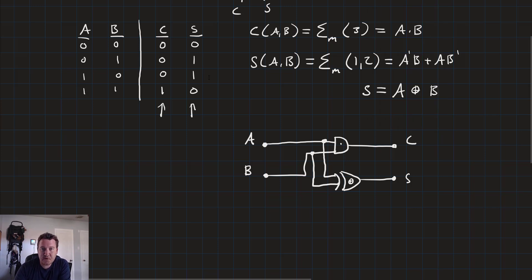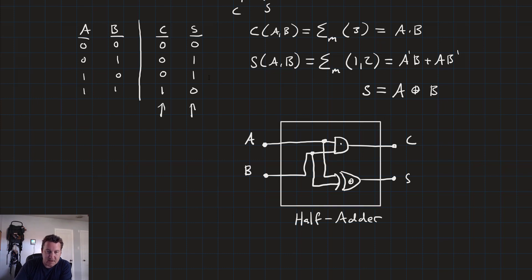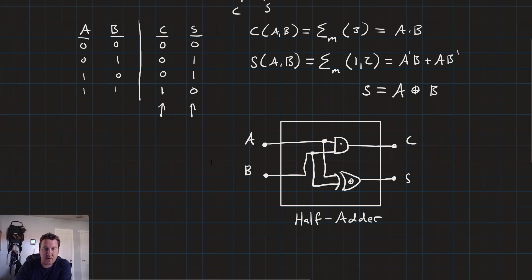This circuit has a name — it's called a half adder. Now if we have a circuit called a half adder, it sort of stands to reason that there should be a circuit called a full adder. And that's true. The full adder takes the capabilities of the half adder and adds the ability to have a carry-in signal so that we can tie these adding circuits together.